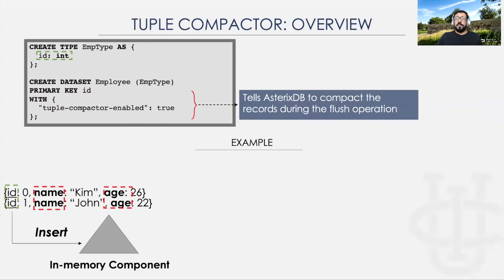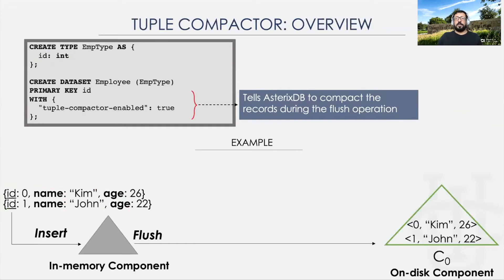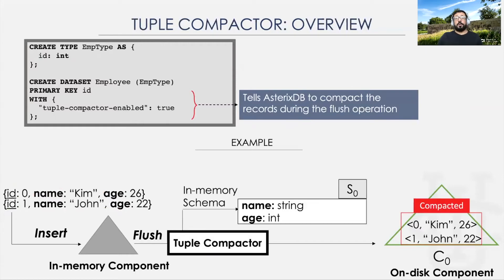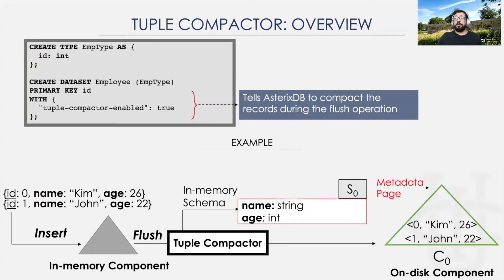As in normal operation, the data gets inserted as-is without any transformation into the memory component. Once the memory component is full, the records get flushed to disk into a new disk component. Before doing so, we take this opportunity to infer and extract the schema from the flushed records and write them in a compacted form into a new on-disk component. Once the flush is done, we persist the inferred schema into the metadata page of the flushed component.